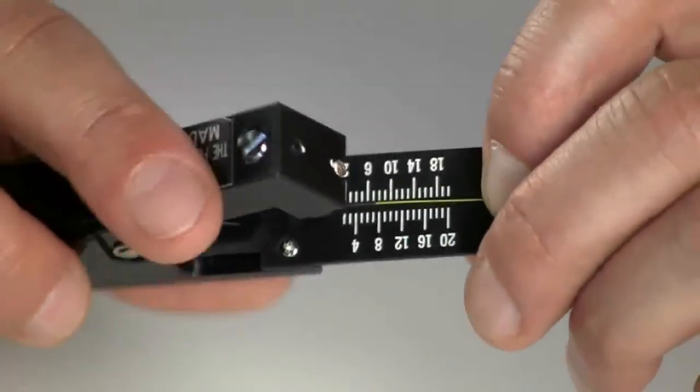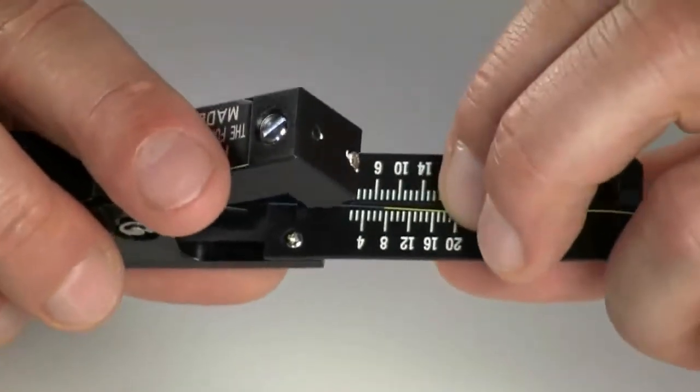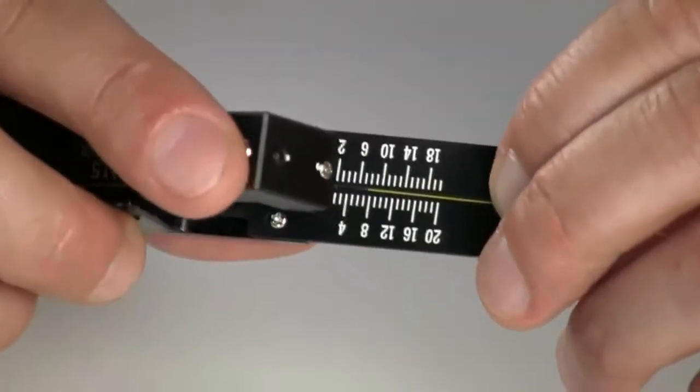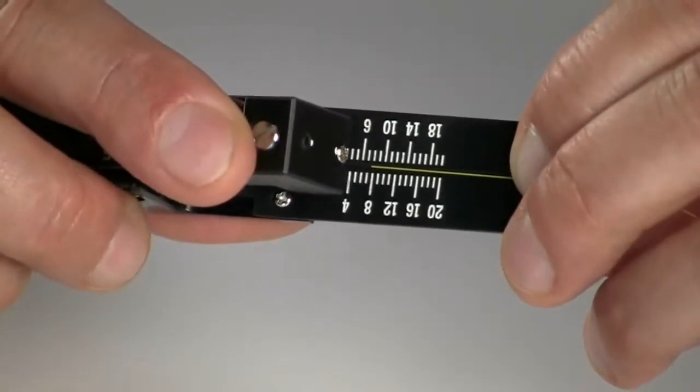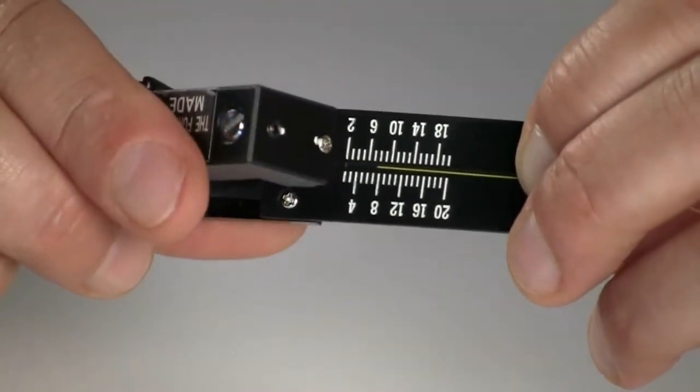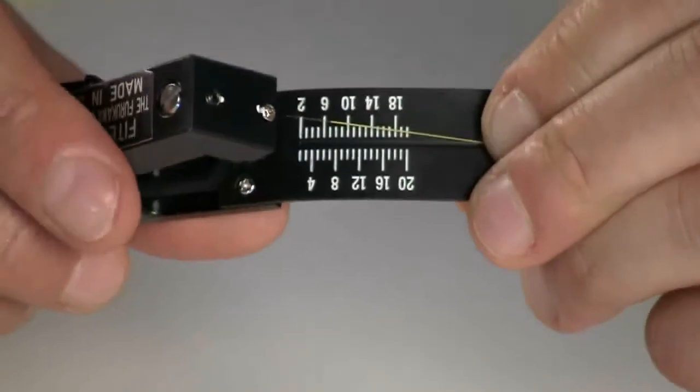Insert the fiber into the Phytal cleaver with the end of the coating at the 7 millimeter mark. Slowly depress the hammer to score the fiber and then bend the tail to cleave.